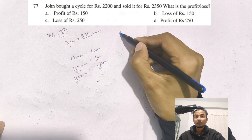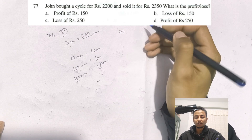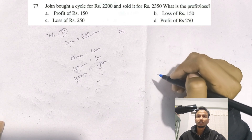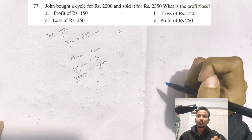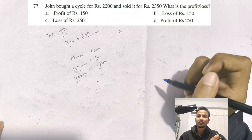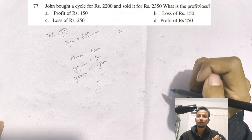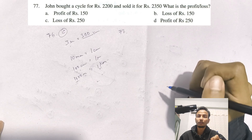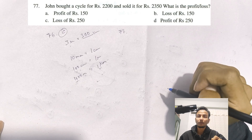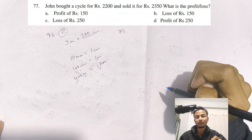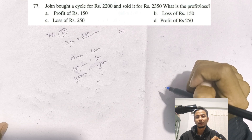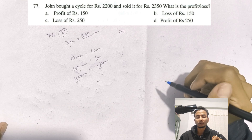Question number 77: John bought a cycle for Rs. 2200 and sold it for Rs. 2350. What is the profit or loss?